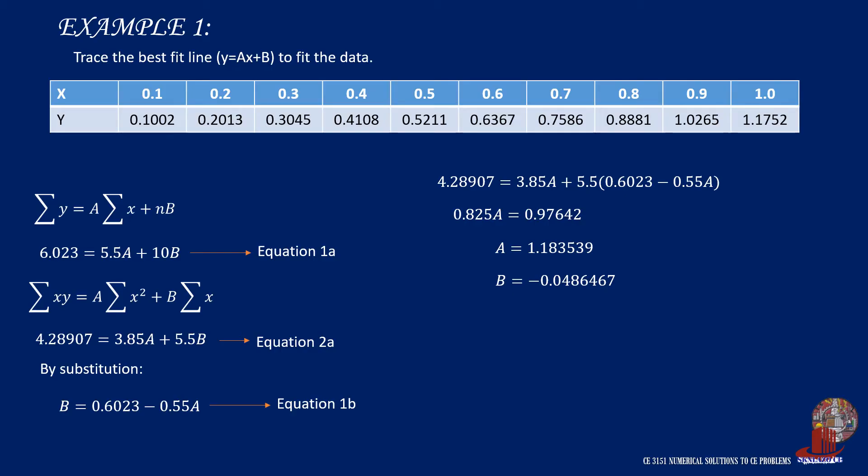Hence, by placing these values into the general form, we get f(x) equals 1.183539x minus 0.0486467. And this is the equation of the dataset's best fit line.